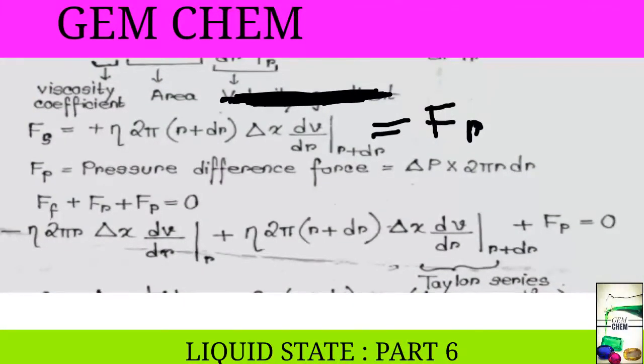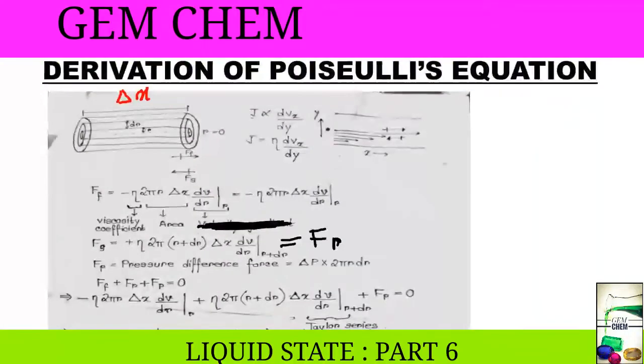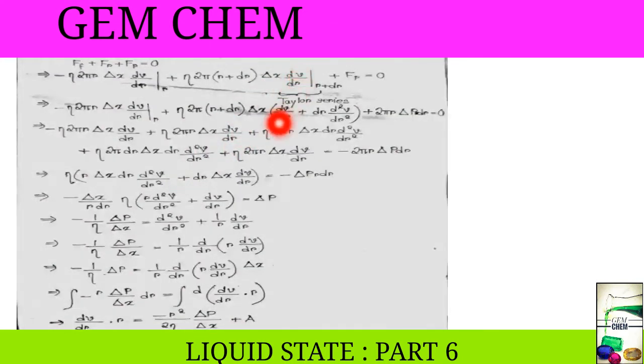Now, we see that the forces are balanced. So, the total amount of all these three forces is equal to 0. We have added these all together. This term, particularly dV by dr in the range of r plus dr, can be expanded using Taylor series. Since dr is very small, we take up to second derivative. We will not go farther. So, we take it as dV by dr plus dr d square v by dr square, and we have substituted the value of Fp here.